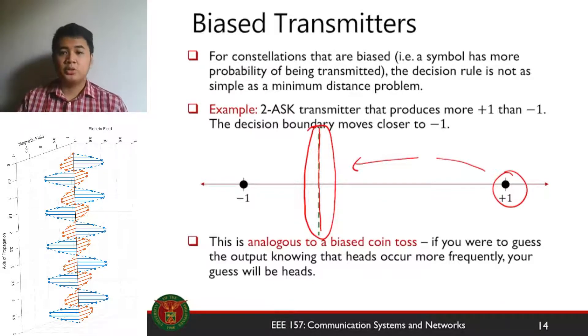If it's equiprobable, you will see that the result of this distance, the decision boundary, will be between the two adjacent symbols at the midpoint.